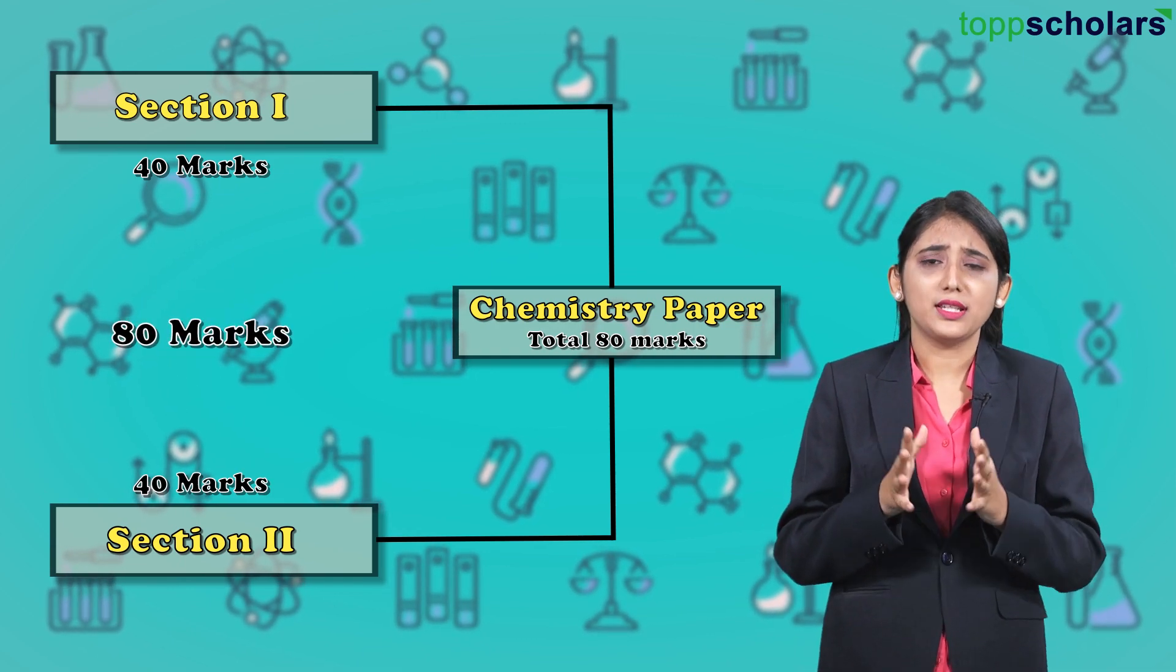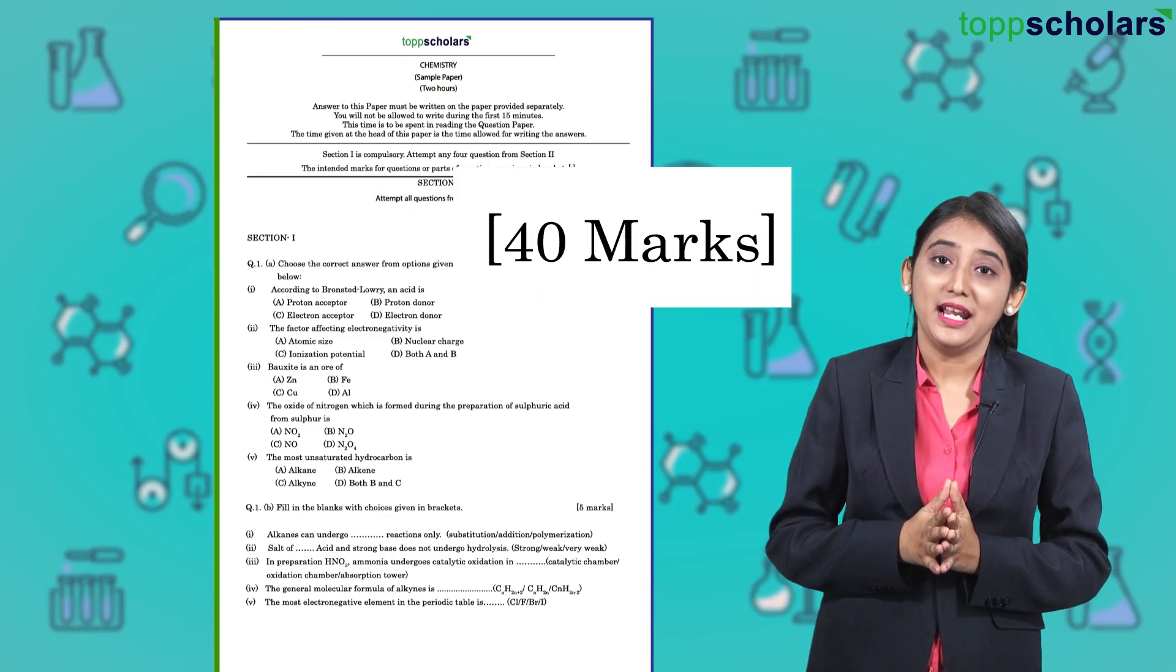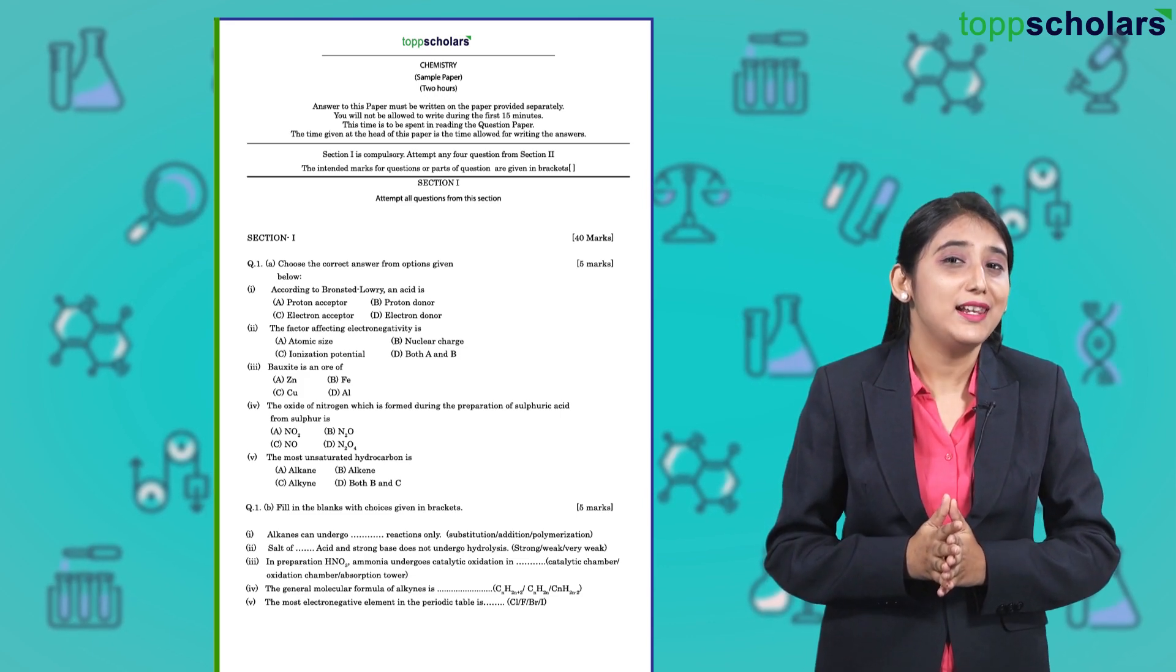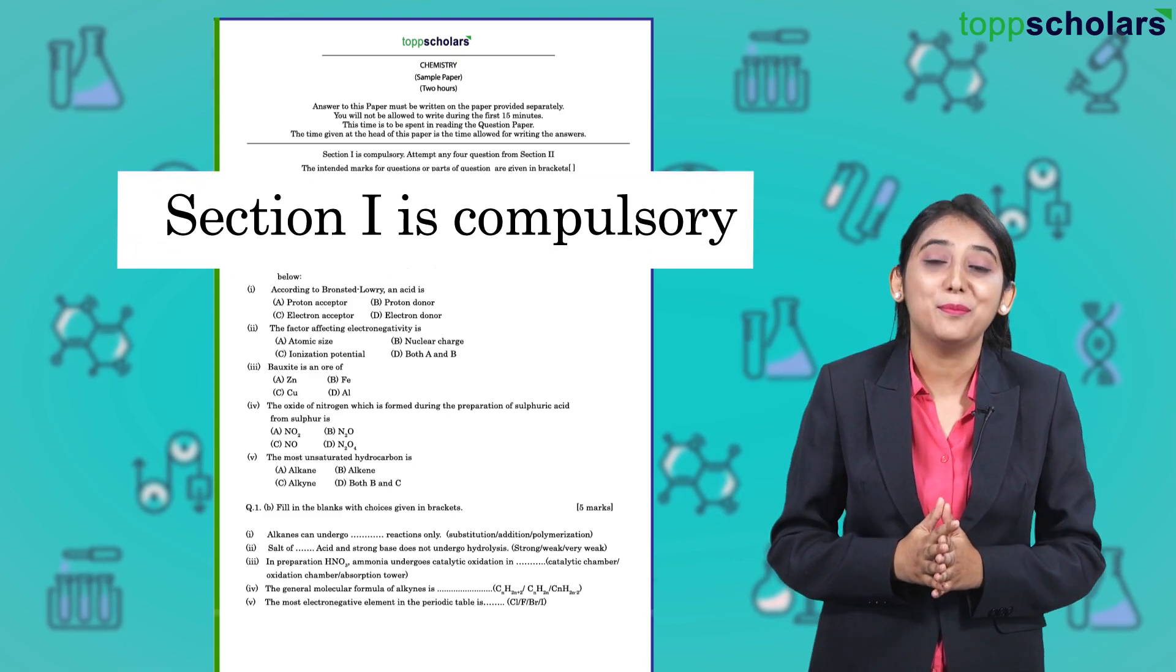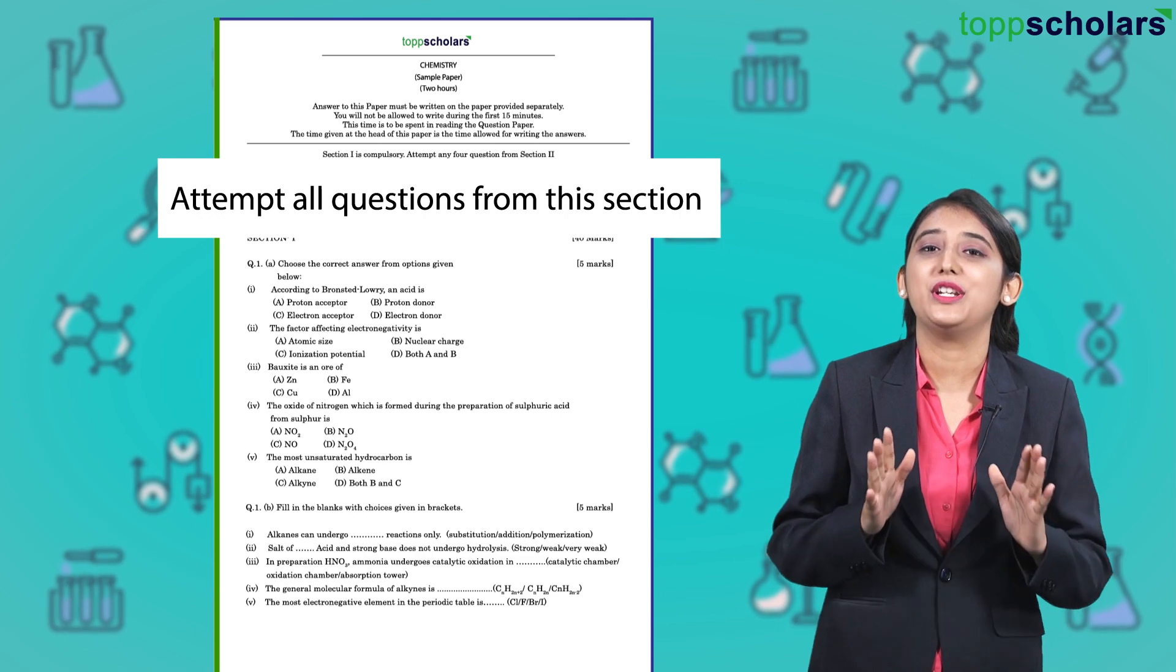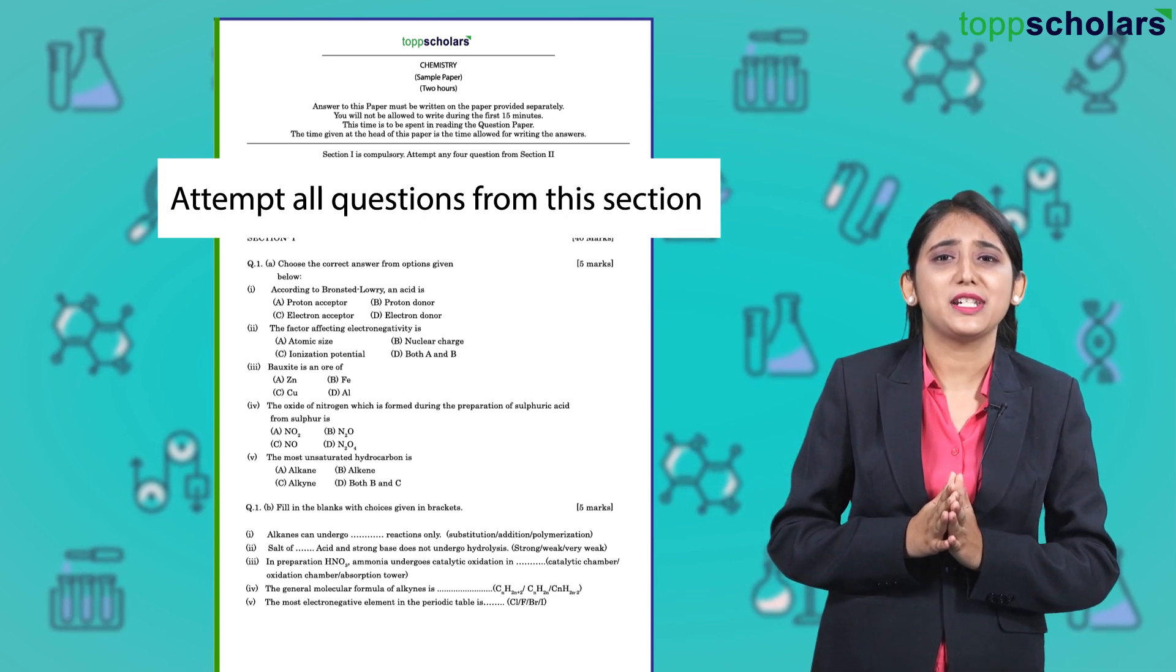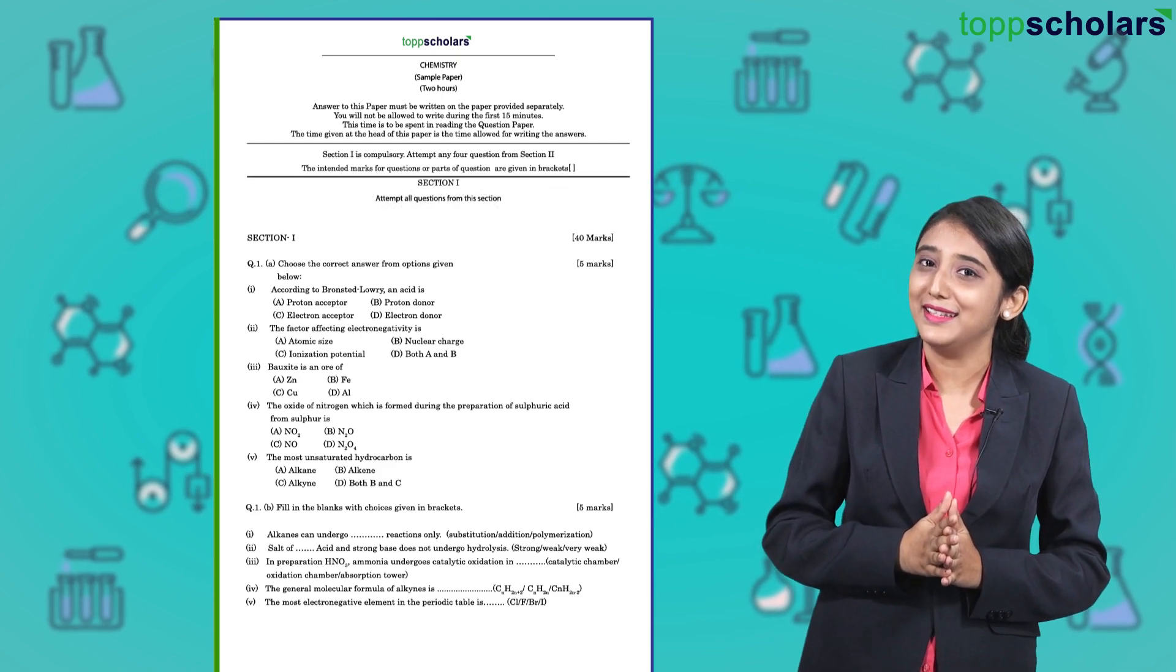Let us first start with Section 1, which carries 40 marks. It consists of all objective type questions, and the most important point is that all the questions are compulsory. That means you do not have any option in this section. So, you need to read your textbook thoroughly so that you can score full marks in this section.